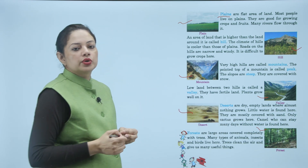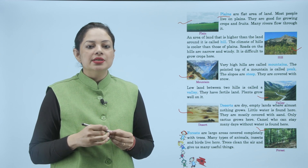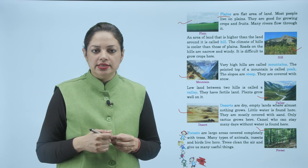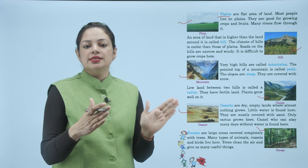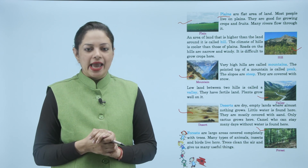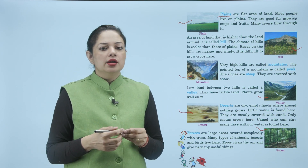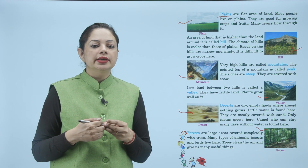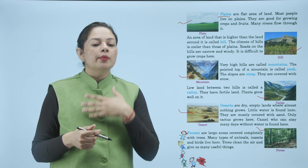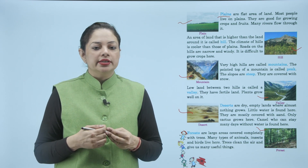Forests are large areas covered completely with trees. Many types of animals, insects and birds live here. Trees clean the air and give us many useful things. Forests जो हैं वो trees के साथ भरे होते हैं, यहाँ बहुत type के animals, insects और birds पाए जाते हैं। Trees हमारे लिए बहुत useful होते हैं और हमारे atmosphere की हवा को शुद्ध करते हैं।